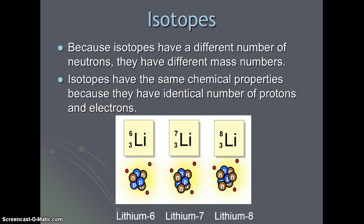Isotopes have the same chemical properties because they have identical number of protons and electrons. The only thing that's different is the mass number and the number of neutrons.